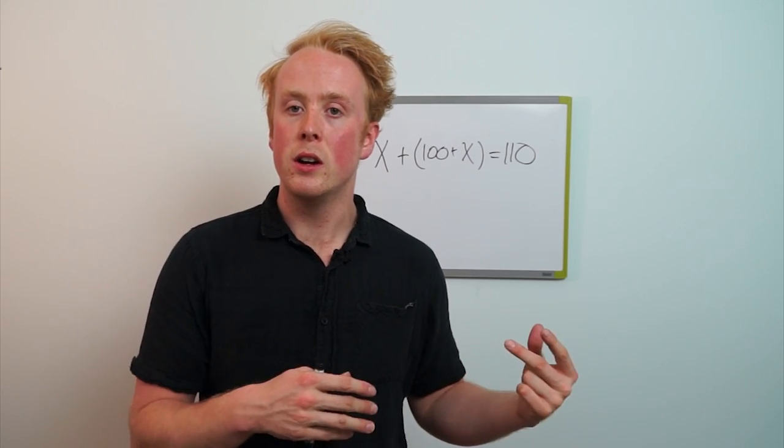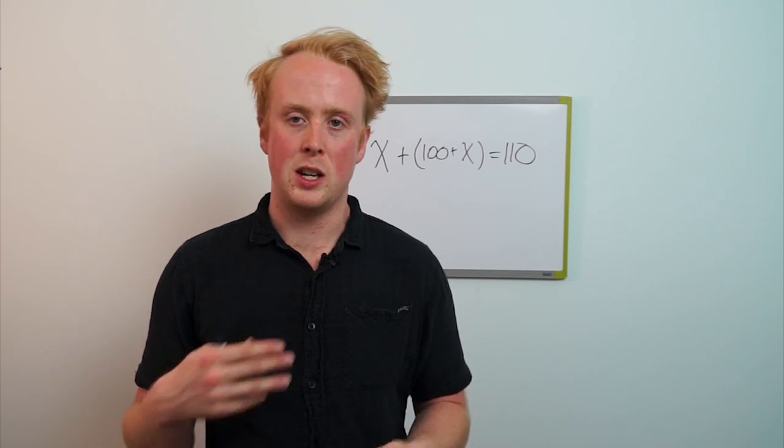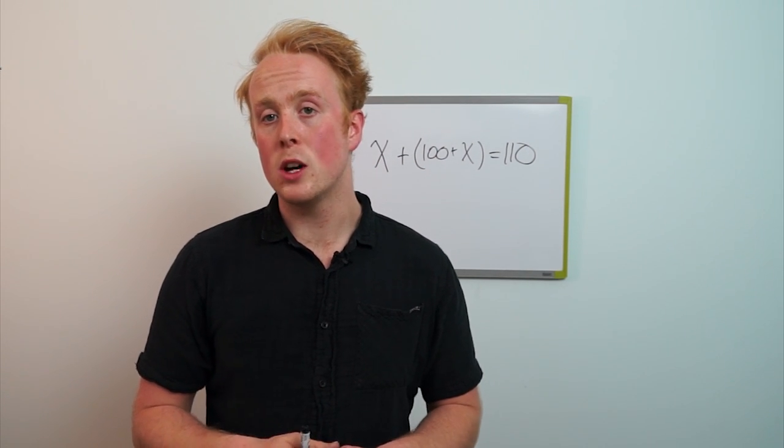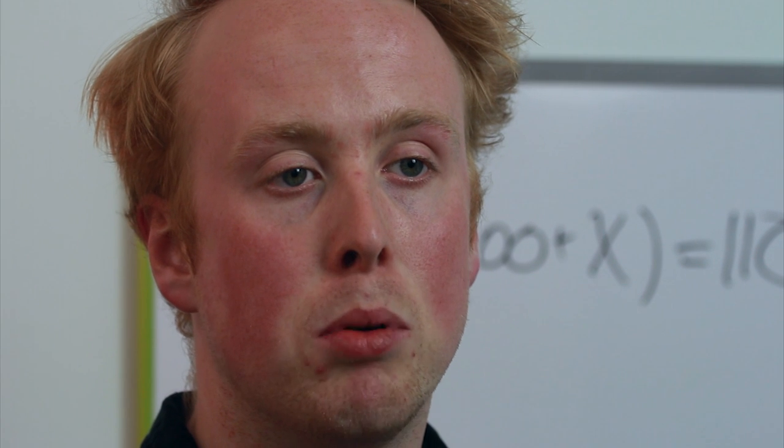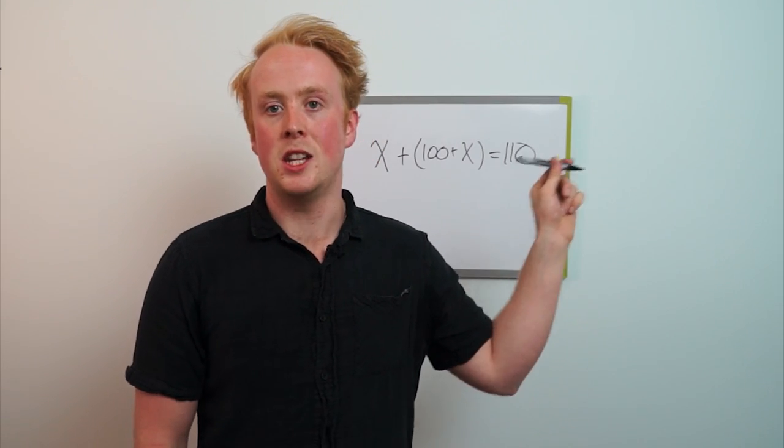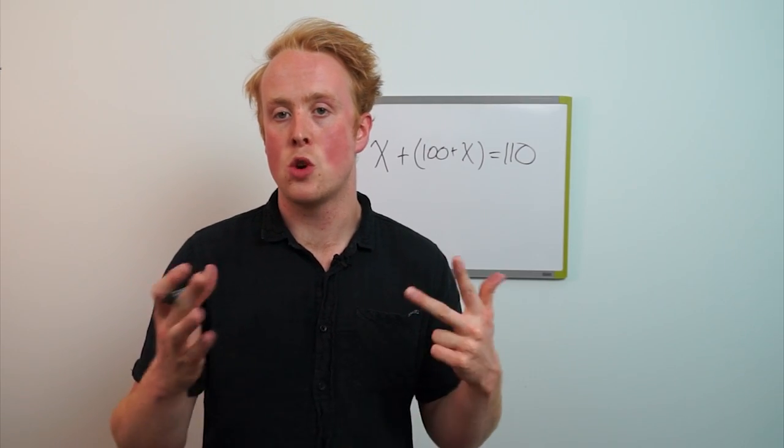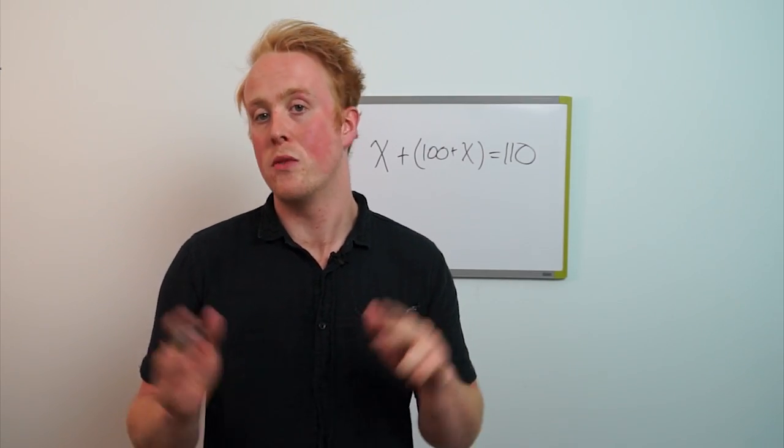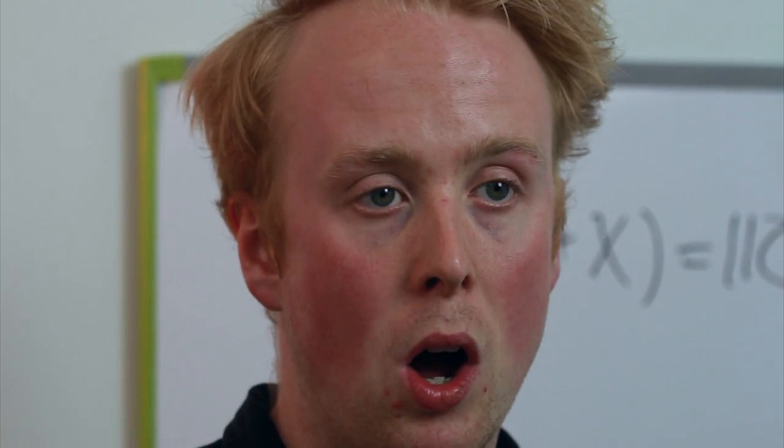Now since we're using one variable relative to another in this equation where we have seemingly two variables, we can write out the equation as x plus (x plus one hundred) is equal to one hundred and ten. This is going to serve as the equation we use to find the value of x or the value of the ball.